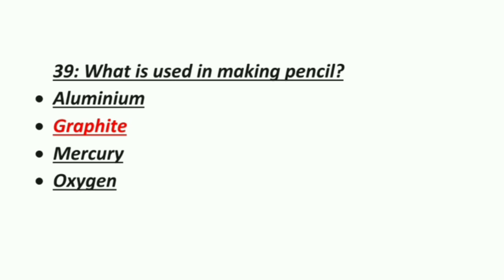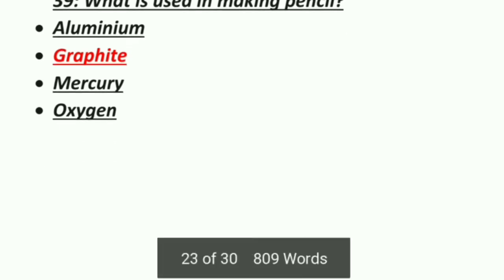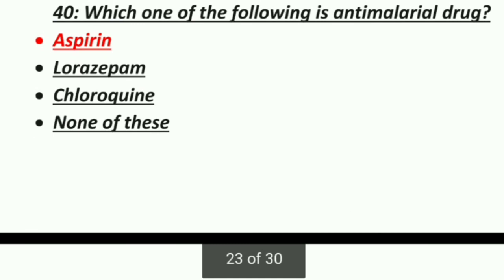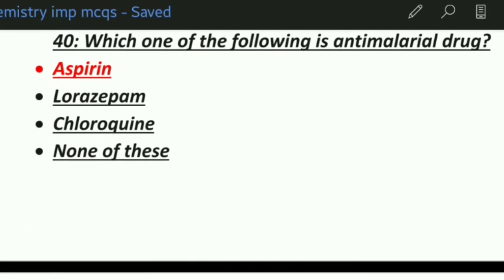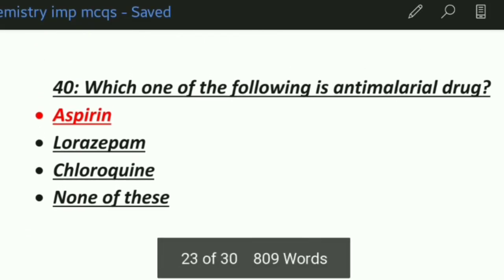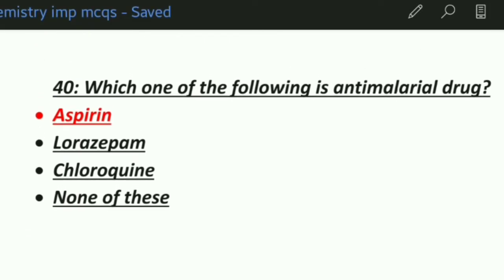Thirty-ninth MCQ: what is used in making pencils? Option 1: Aluminium, Option 2: Graphite, Option 3: Mercury, Option 4: Oxygen. The correct answer is graphite — graphite is used in making pencils.